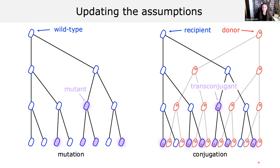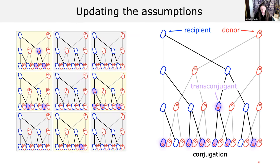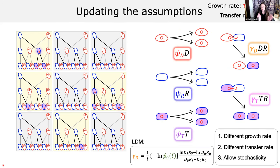Conjugation events are similar — they're also transforming the genetic state of the cell, taking a recipient and adding a new DNA element, so it's a type of genetic transformation. But instead of tracking just the recipient population, we also need to track the exponentially growing donor population through time. That's the key difference between mutation and conjugation. Looking at mating assays, if you run them for a short enough period of time, some will have no conjugation event occur and others will — very similar to the mutation process.